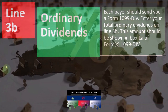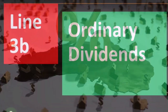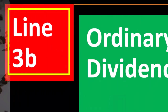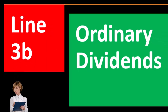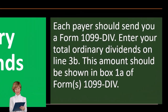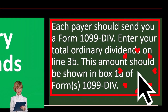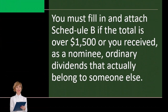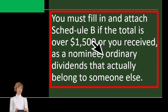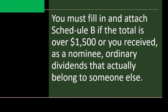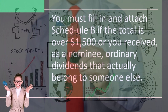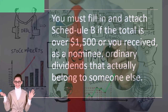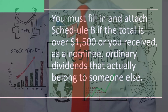Software is useful in this situation as well. Line 3b, ordinary dividends: each payer should send you a Form 1099-DIV — that's the financial institution you're investing with. Enter your total ordinary dividends on line 3b; this amount should be shown in box 1a of Form 1099-DIV. You should fill in and attach Schedule B if the total is over $1,500, or you received as a nominee ordinary dividends that belong to someone else. Schedule B includes what we might think of as passive types of income — income from investments such as interest and dividends. If the amount goes over $1,500, the IRS wants you to report it not only on the first page of Form 1040 but also to include Schedule B.